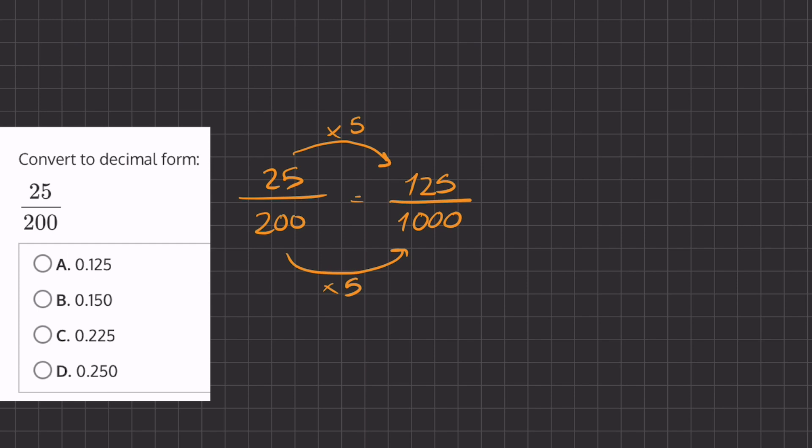Now once we have a fraction that looks like this in its form where there's a 1000 or a 100 in the denominator, we can easily take this 125 that has a decimal place right here—we just usually don't write it. And we'll move the decimal over the amount of places equal to the amount of zeros after the 1.